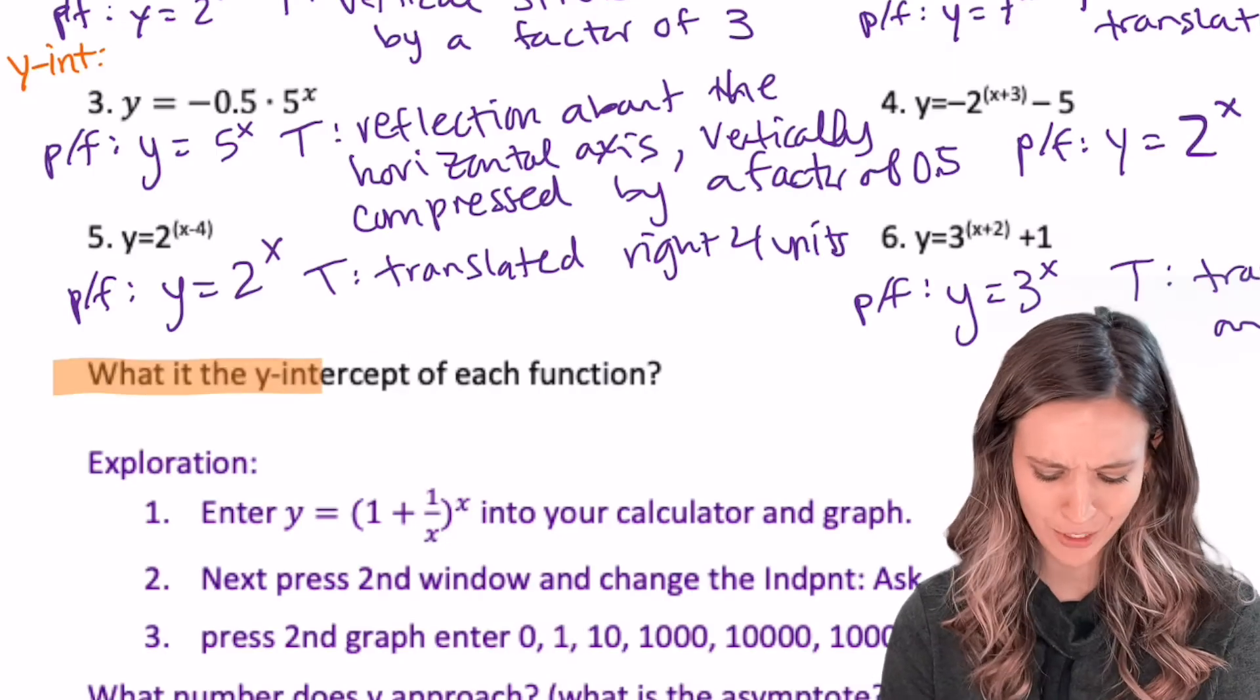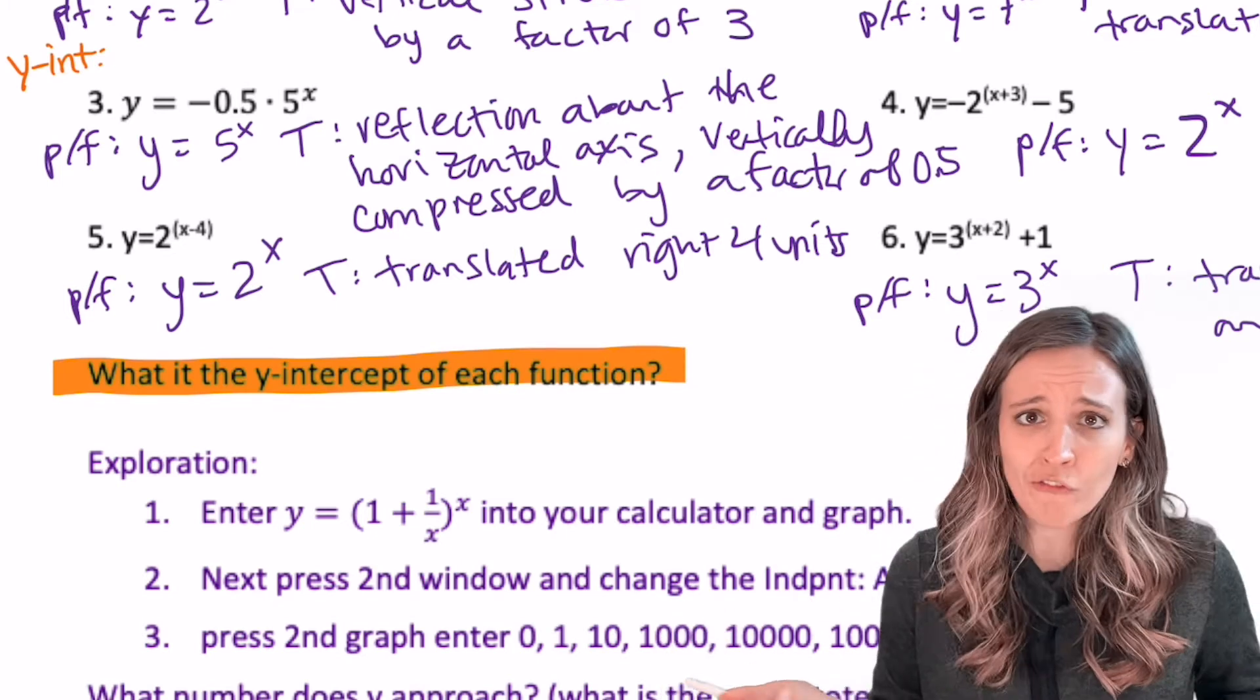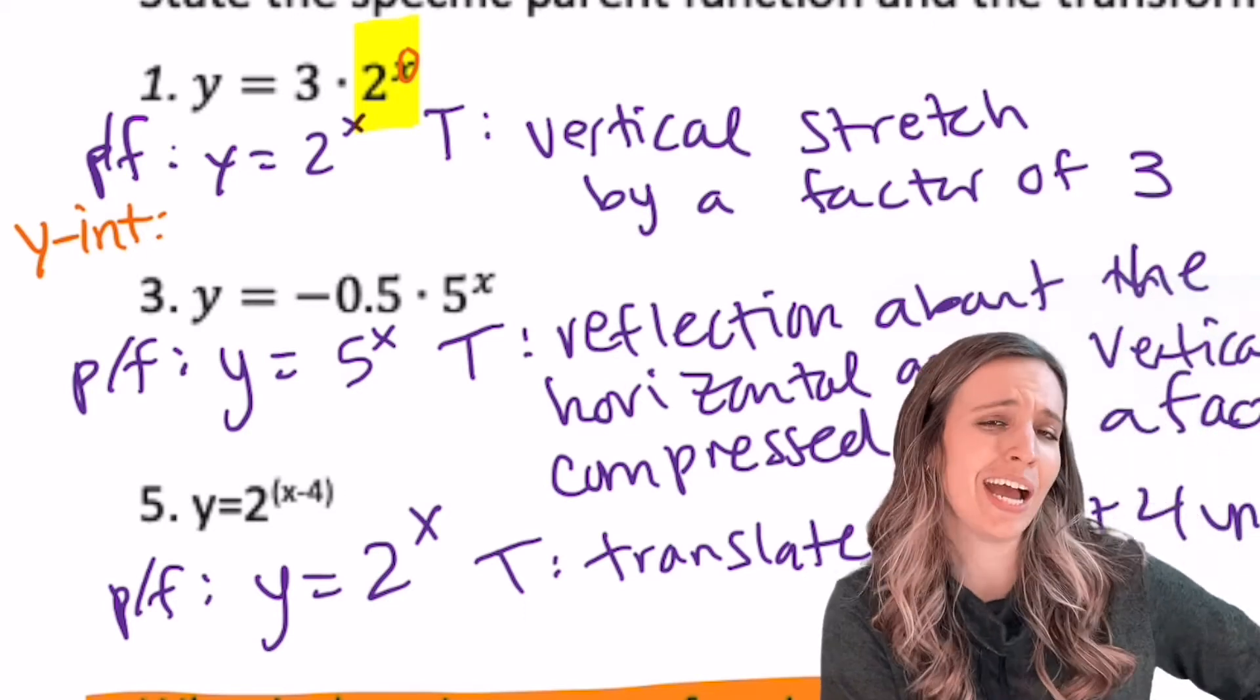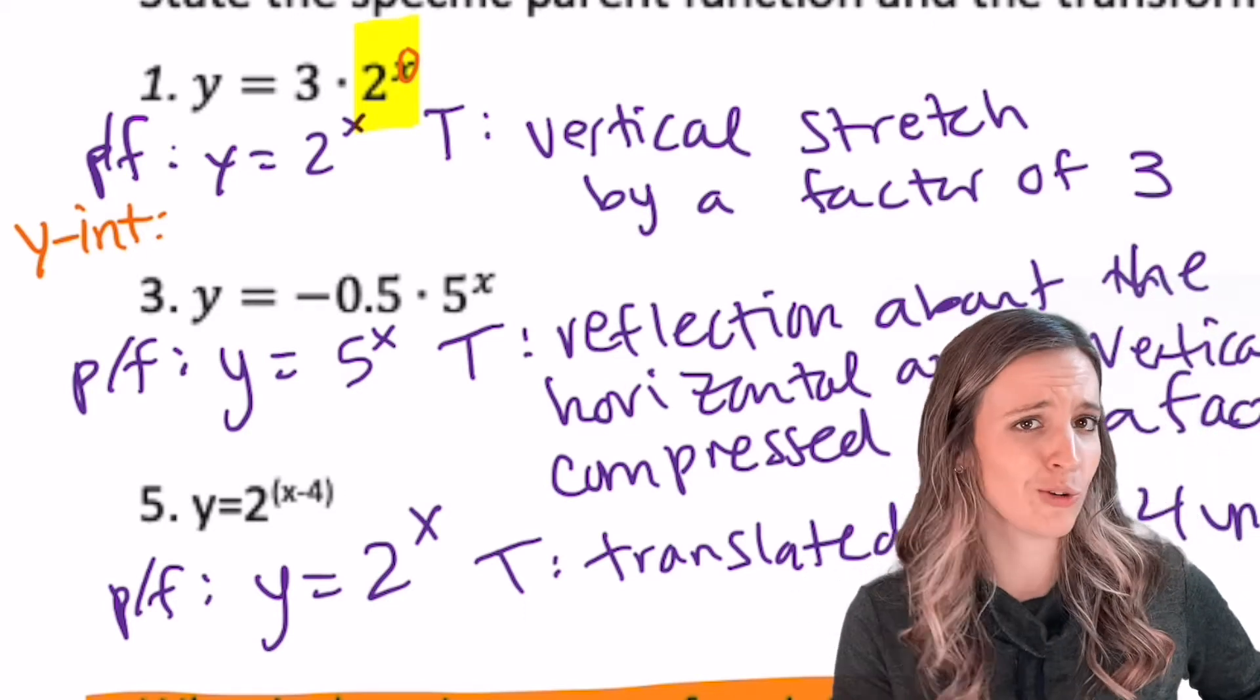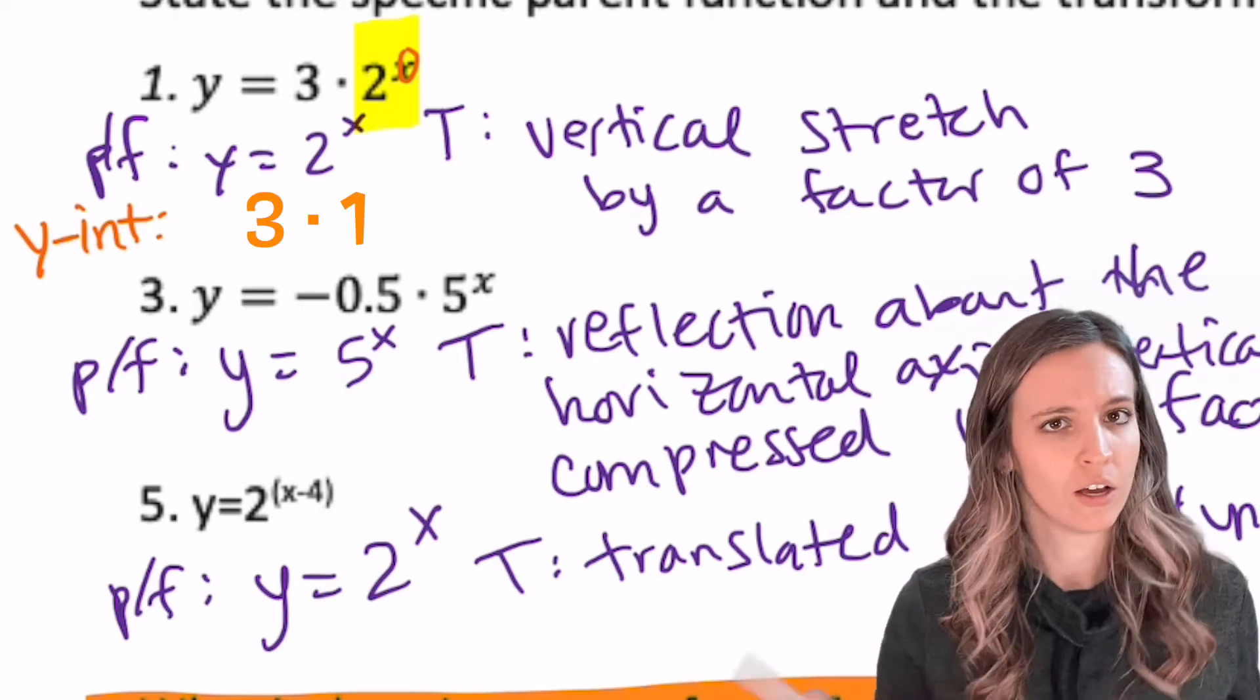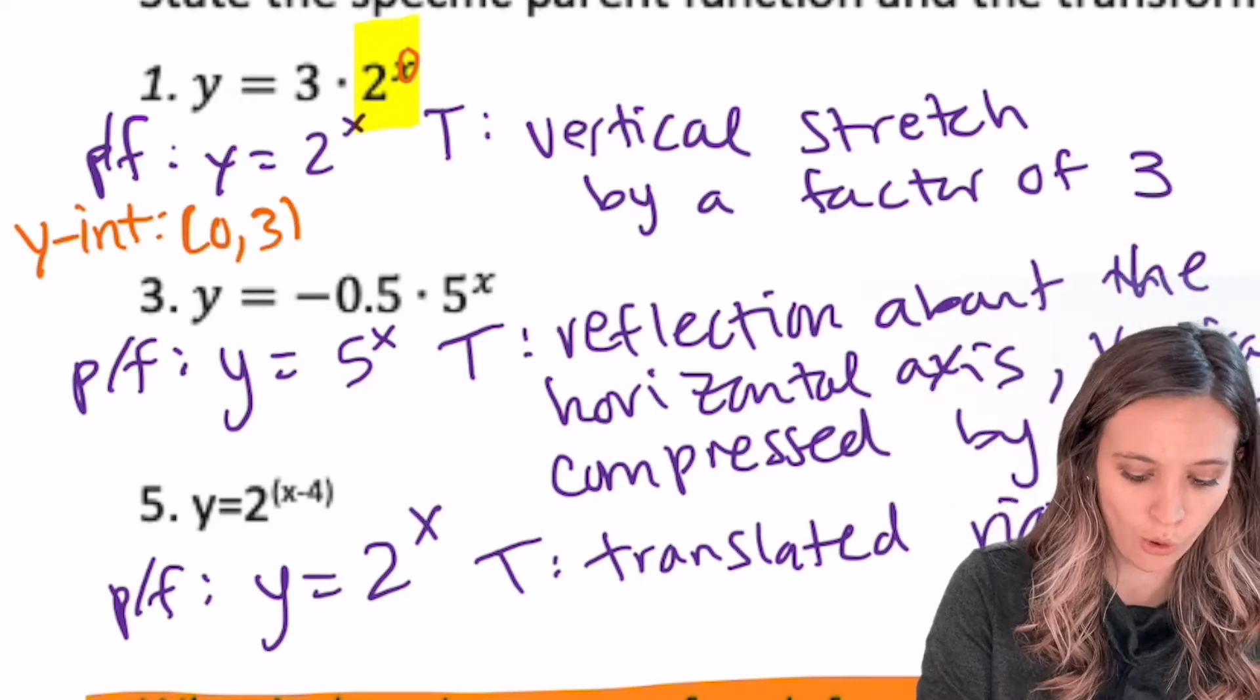Okay, now it's time to find the y-intercept. We already know how to do that, too. Plug in 0 for x. First function, let's just pop a 0 in for that x, 3 times 2 to the 0 power. Evaluate 2 to the 0. Anything to the 0 is 1. 3 times 1 is 3. We're not just going to write y equals 3, though, right? No, we're going to write 0, 3. Coordinate.